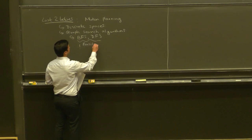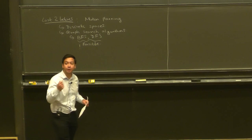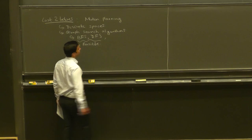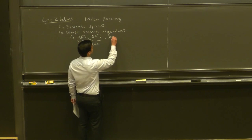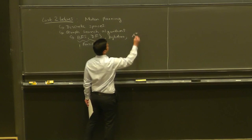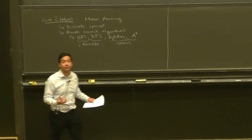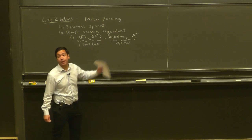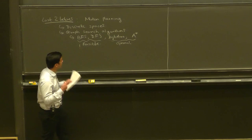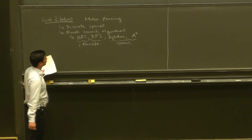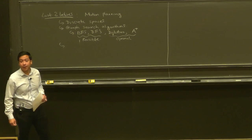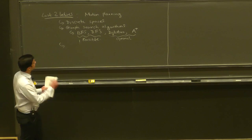BFS and DFS are algorithms that give us feasible motion plans — meaning they get you from point A to point B without colliding with obstacles. Then in the previous lecture, we described two additional algorithms: Dijkstra's algorithm and the A* algorithm. These give you optimal motion plans — you define some cost function, and these algorithms give you both feasibility and optimality, finding the optimal path however you define optimal.